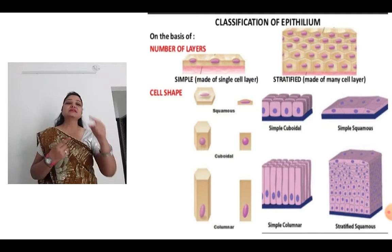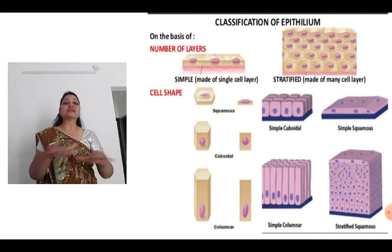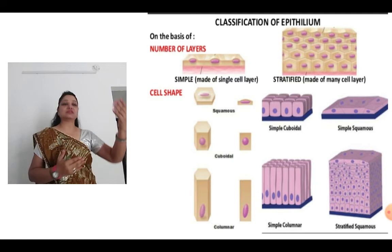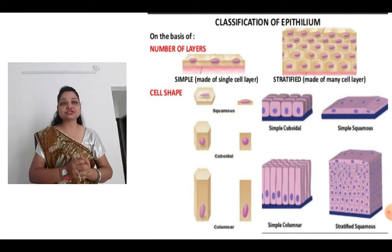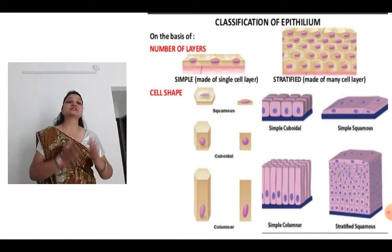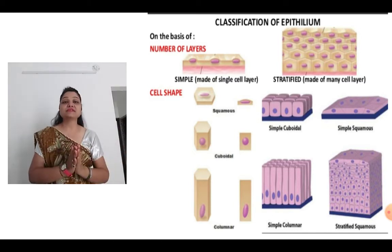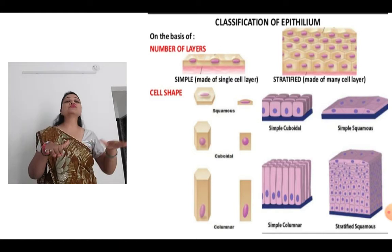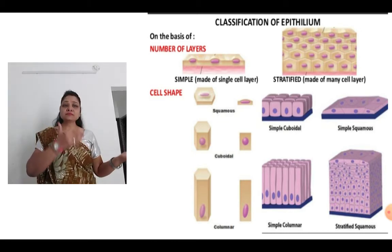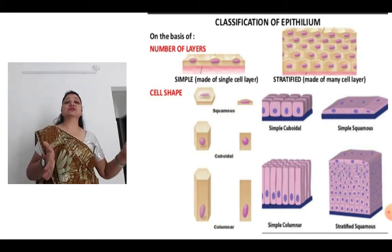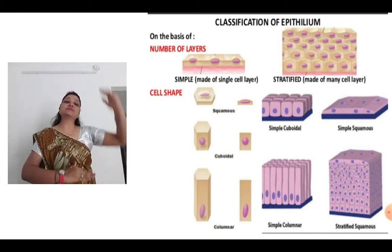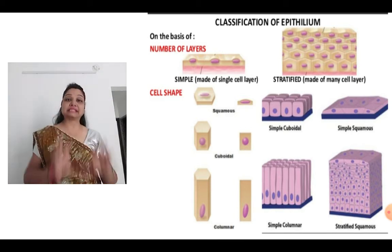Squamous means broad and flat. Cuboidal has the shape of a cuboid. And columnar has the shape of columns. As you can see in the picture, it is very clearly shown — the single unit as well as the complete arrangement, the simple one and the stratified one. In simple cuboidal, single cells form one layer. In simple columnar, one layer of column-shaped cells is there. Whereas in stratified, different layers are stacked one above the other.